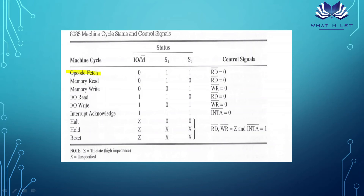From the status signals table: for opcode fetch, IO/M bar is 0 (memory), RD bar is low since it is a memory read. For memory read, IO/M bar is 0 and RD bar is low; S1 is 1 and S0 is 0. For memory write, IO/M bar is still 0 (memory operation), and WR bar is 0. This table helps us draw machine cycle and instruction cycle diagrams in examinations.